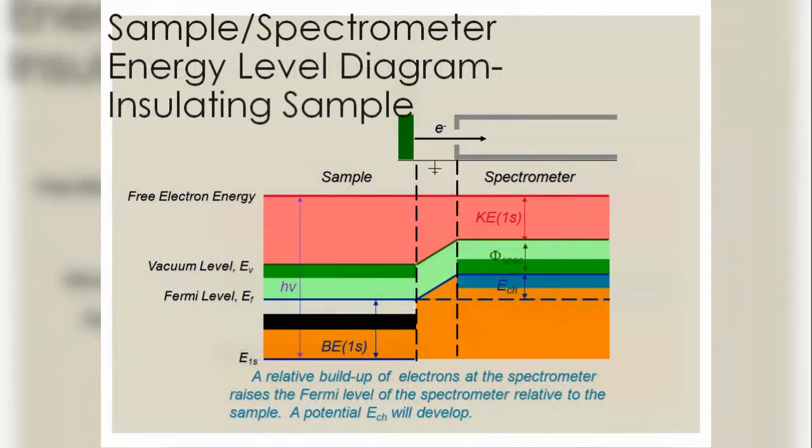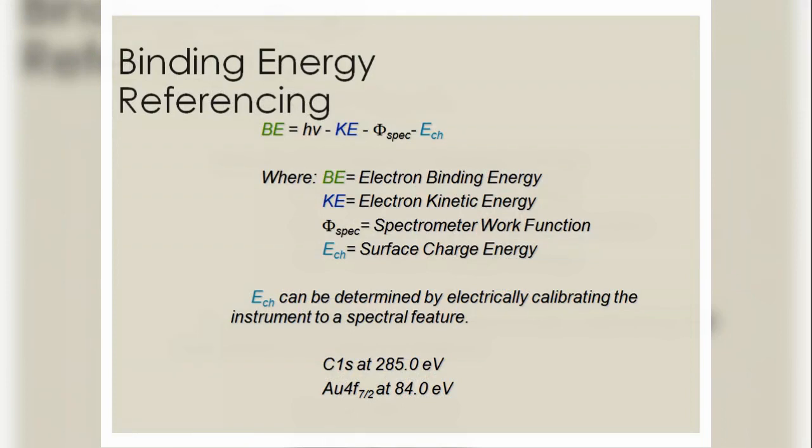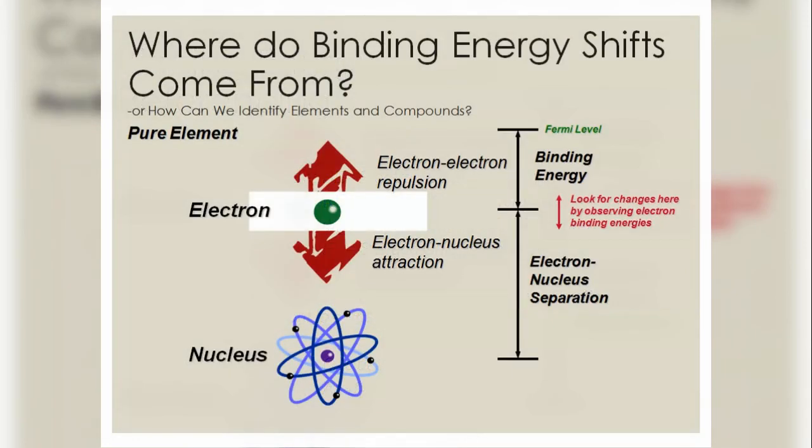So binding energy referencing. The total binding energy is hν - KE - φ_spec where the new term E_CH can be determined by electrically calibrated instrument to a spectral feature. So where do the binding energy shifts come from? From the electron and the nucleon. Look for changes by observing electron binding energies.